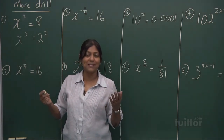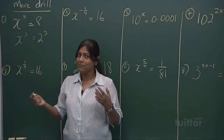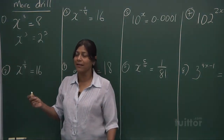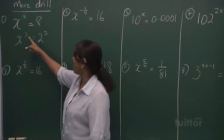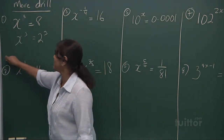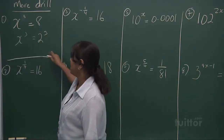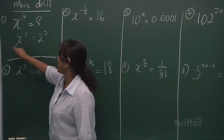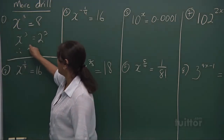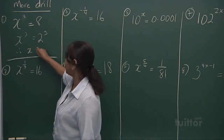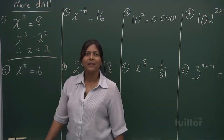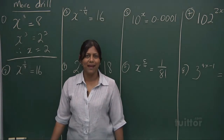The left-hand side must be equal to the right-hand side, as the powers are both the same. Therefore, your x is 2. Create that link.